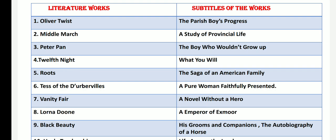Lorna Doone: A Romance of Exmoor, subtitled The Emperor of Exmoor, is a romantic novel featuring a historical character of the 17th century, written by Richard Blackmore.